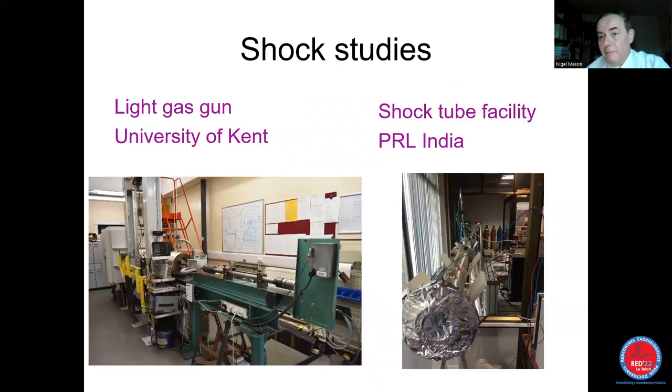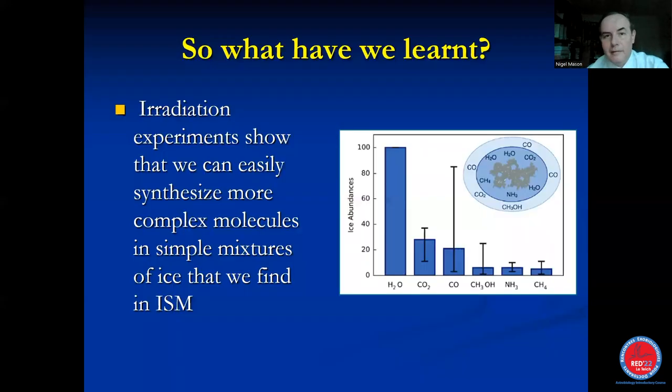We can also produce these shock waves. We can look at grains bouncing into each other or we can produce a rarefied shock wave from a gas jet, which comes down and creates a kind of shock wave of gas onto the dust grain and see what it makes. At the University of Kent, we have a light gas gun where we can collide particles. We can fire particles into ice to see the change. And in India, there's many shock facilities where they do these shock wave analysis. And we'll see an example of that later.